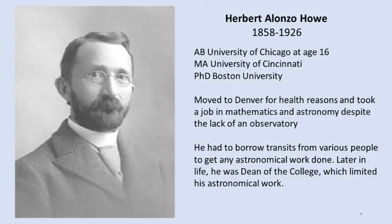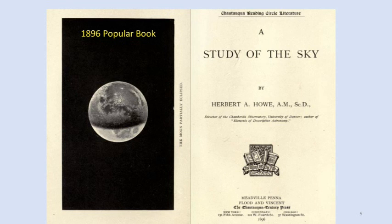Herbert Howe was a smart guy, got a degree in math at age 16 from the University of Chicago, moved later to Denver for the fine, healthy mountain air we used to have here. The University of Denver had no large telescope, so he went about building this one. He also wrote a popular book on astronomy in 1896, which explained much about the daily operations of the observatory.